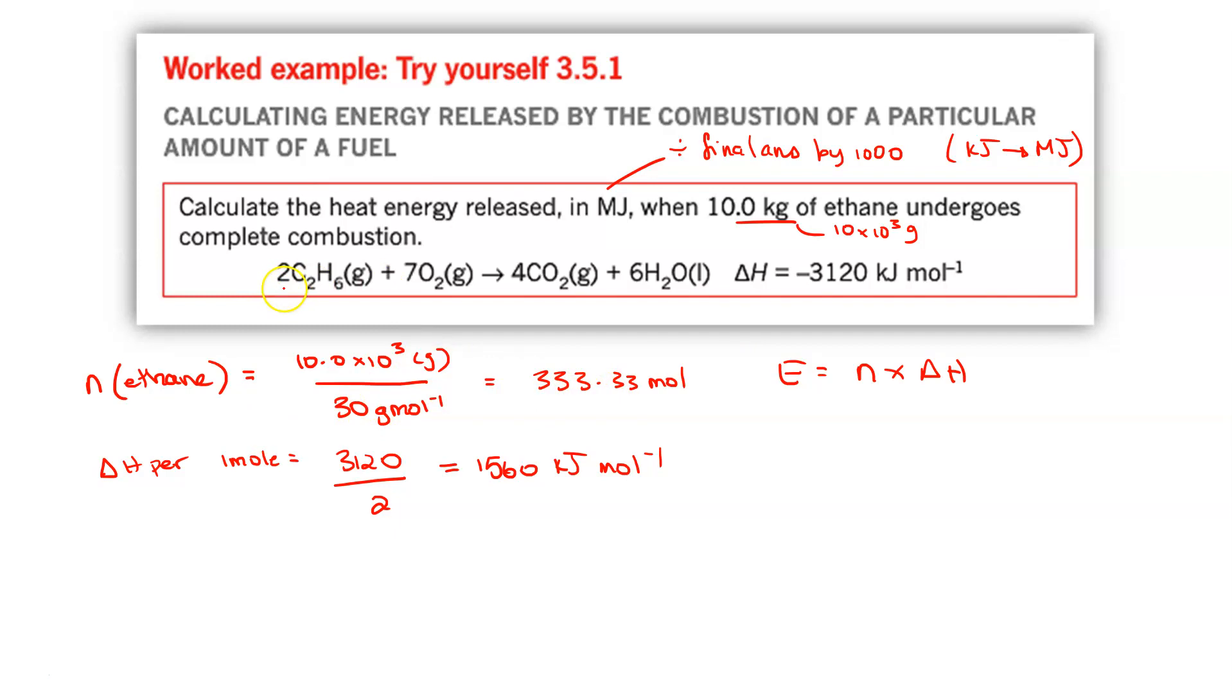Again, we have a coefficient of 2 in front of our fuel. So we need to divide the delta H by that coefficient and gives us 1560 kilojoules per mole. So now we're up to calculating the energy. We're going to take 333.33, multiply that by 1560 and we will get a grand total of 519994.8 kilojoules. We've been asked to give this in megajoules. So we want 520 megajoules as our rounded answer. Hopefully that's what you got.